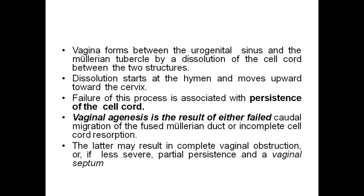Vaginal agenesis is a result of either failed caudal migration of the fused Mullerian duct or incomplete cell cord resorption. This may result in incomplete vaginal obstruction or, if less severe, partial persistence and vaginal septum.